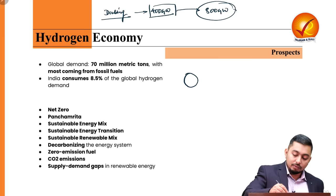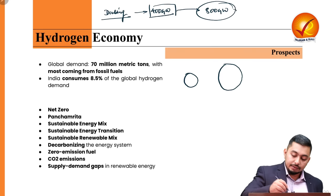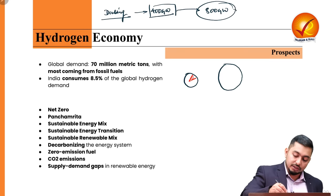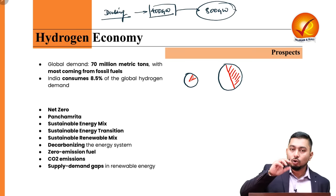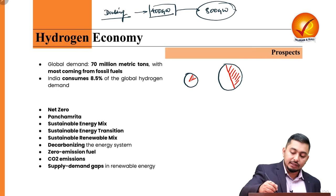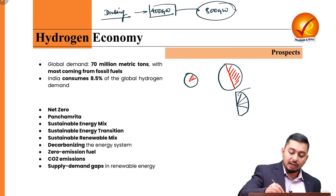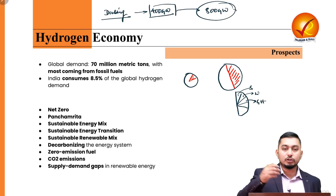We need to increase the size of the energy pie and move renewable energy's contribution to 50%. This 50% must be divided into multiple energy sources — solar, wind, and green hydrogen — because we cannot depend solely on solar, which fluctuates due to day and night, or wind, which fluctuates with direction and speed, or thermal power plants that take 24 hours to reach full capacity. We need a sustainable energy mix.